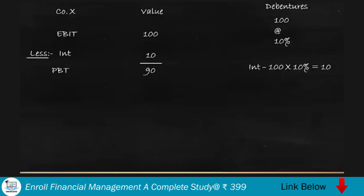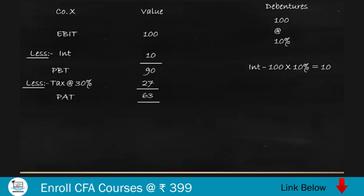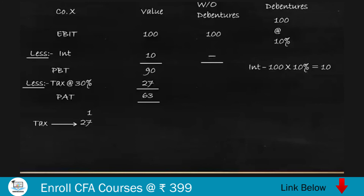In Scenario 1, tax is paid at 30% on PBT of 90, which is 27, giving a profit after tax of 63. The tax paid in Scenario 1 is 27. In Scenario 2, the company has the same EBIT of 100 but no borrowings or debentures, so there is no interest to deduct. PBT is also 100, and tax at 30% on 100 is 30.